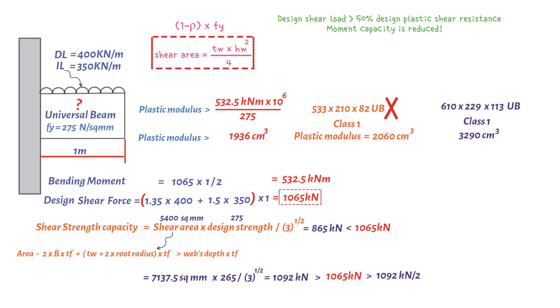Hence, the reduced design plastic resistance moment about the major axis may be taken as shown. Where rho equals 2 design shear divided by shear capacity minus 1, close bracket squared. Area web equals the web thickness times the depth of the web.